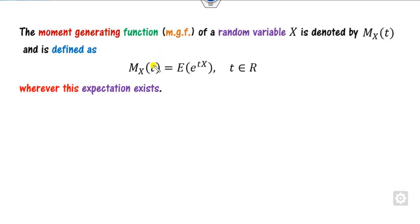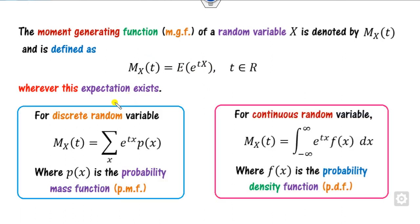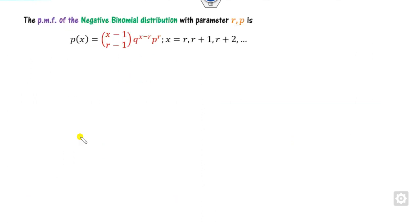How do you define the MGF? The MGF is nothing but the expected value of the exponential part, provided this expectation exists. If the random variable is discrete, you write this as an infinite series; if it is continuous, as an integration. If this integration or summation exists, then the MGF of the random variable X exists. Now we will see how to define the MGF of the negative binomial distribution.